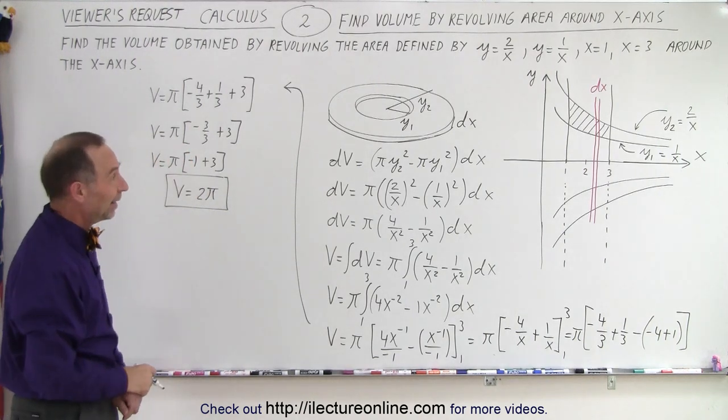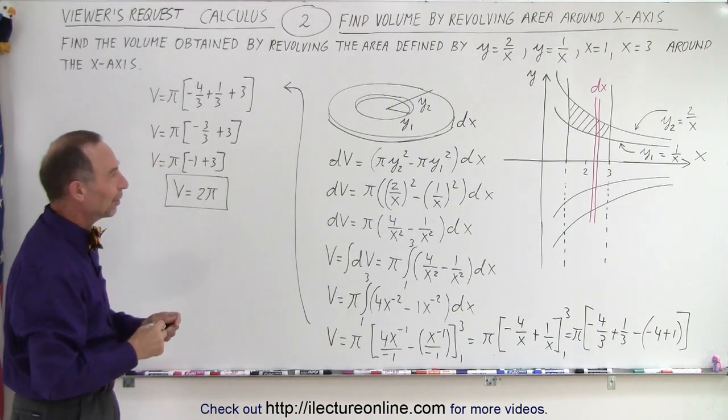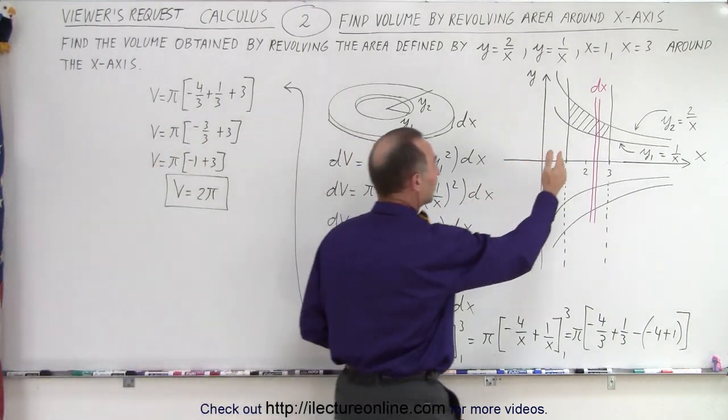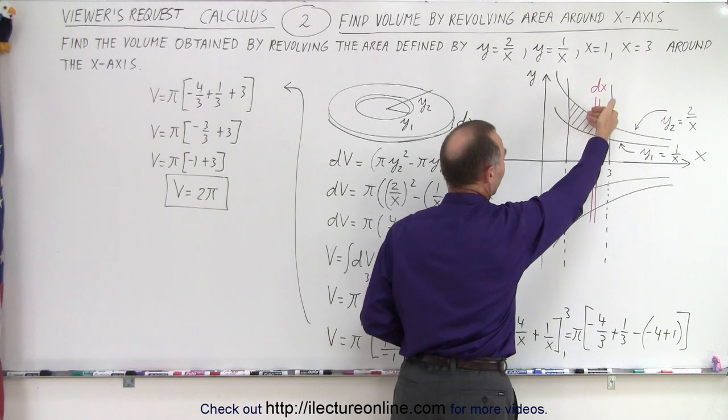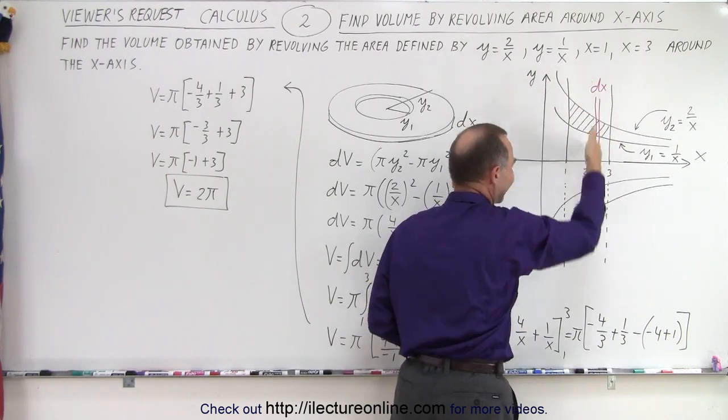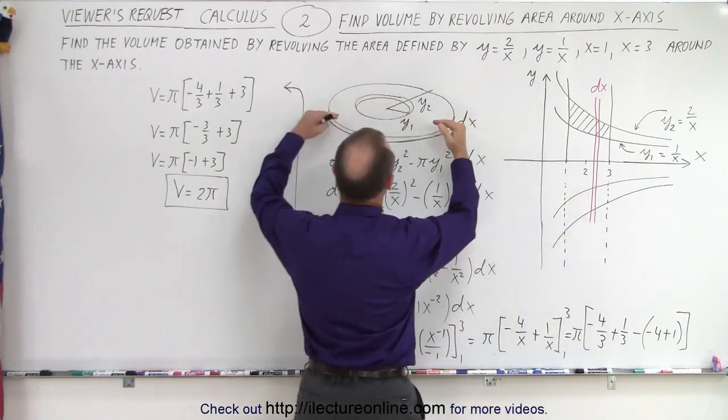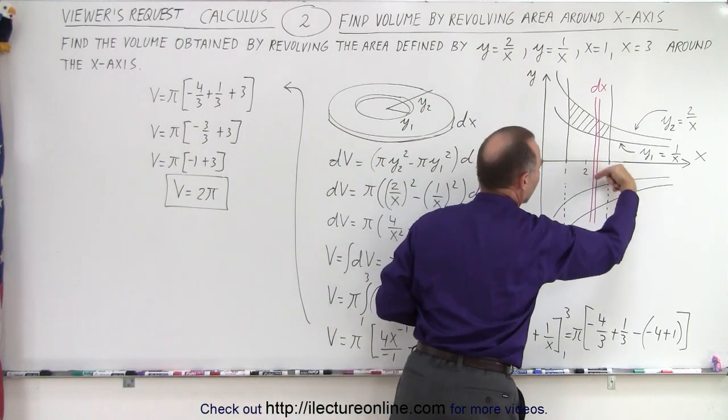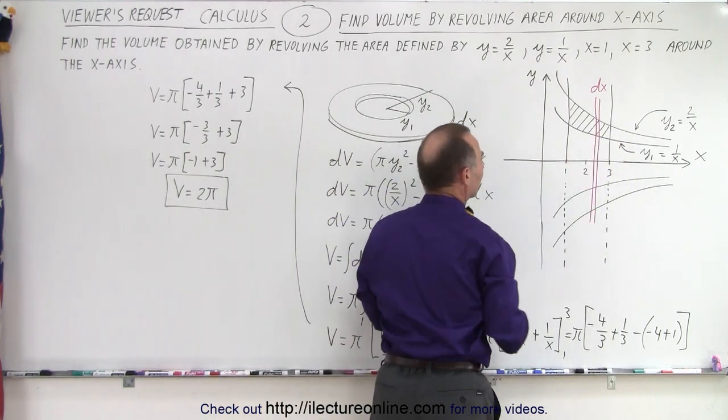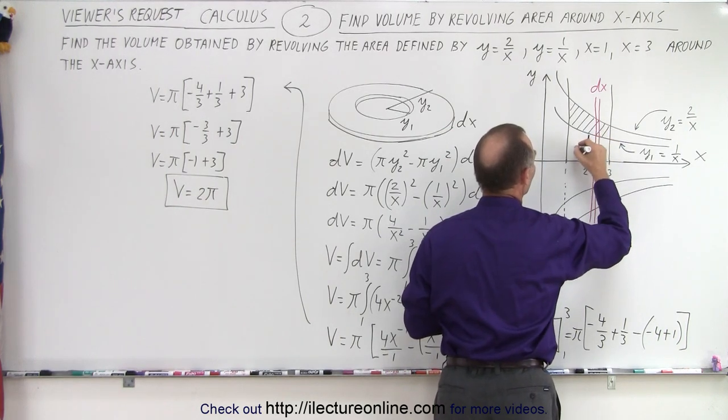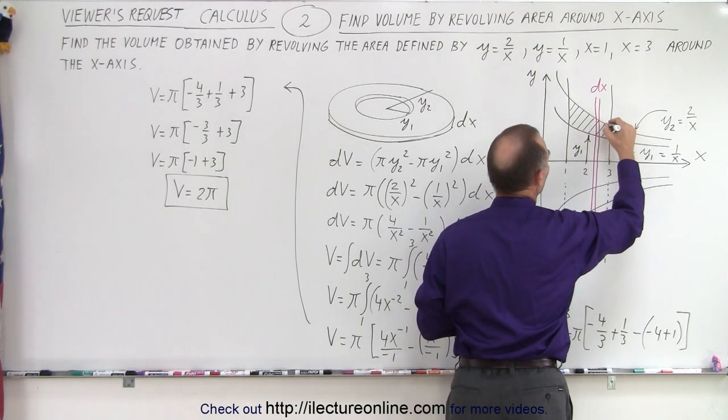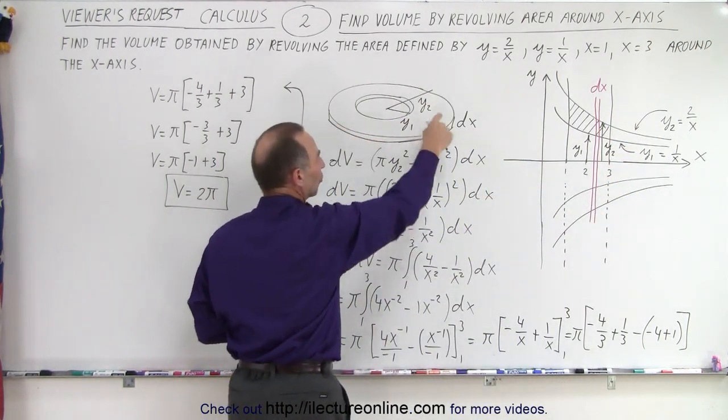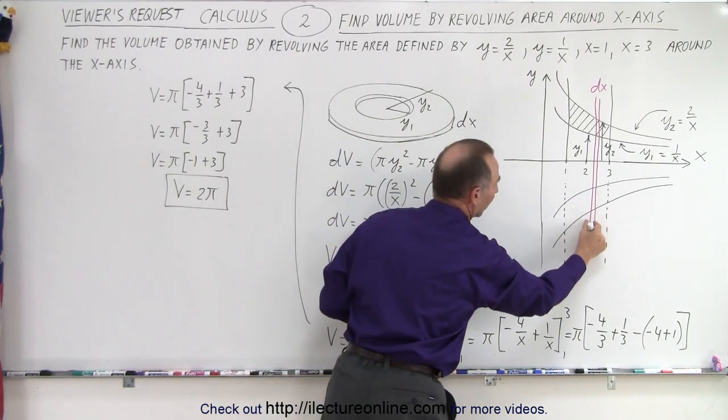It's an interesting result, 2π. But that is how we find the volume of an area that's defined by two curves and two lines. We revolve it around the x-axis, then we take a slice of that. The trick is to take that slice, realize that it's a washer. This is the hole right here, and the thickness dx is the thickness right here.